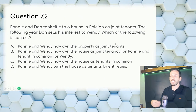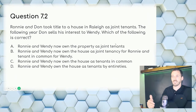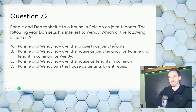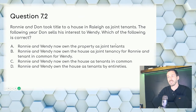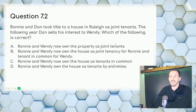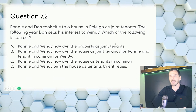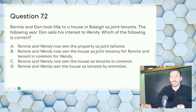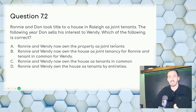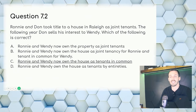Question 7.2: Ronnie and Don took title as joint tenants. The following year Don sells his interest to Wendy. Which is correct? This is memorization — know how title is held. When a joint tenant sells their interest to a third party, the joint tenancy is severed. Answer: C — Ronnie and Wendy now own the house as tenants in common.